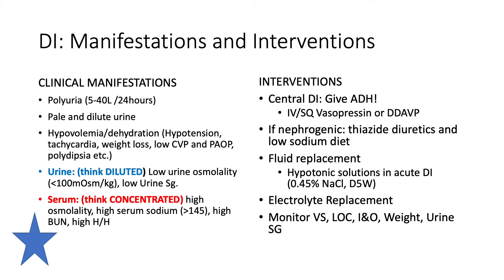A lot of lab values start to look high because there's less water in the body and everything is more concentrated. In the urine, it's the opposite: because all the water is leaving through the urine, our urine looks really dilute, our urine osmolality is low, and the specific gravity of urine — relating to density and how well urine is concentrated — is low too.